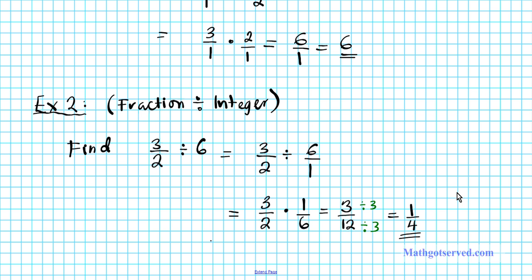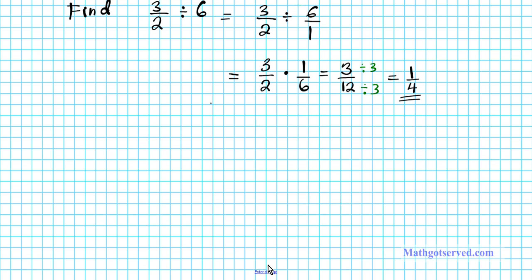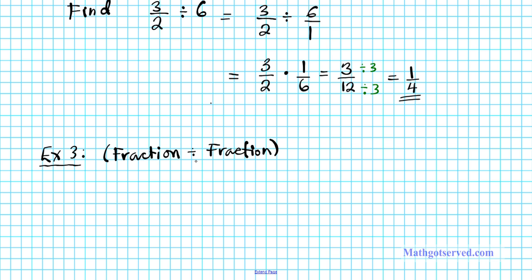Let's take a look at the next example. Example 3: we are going to divide a fraction by a fraction. Let's see how we can apply the drop change flip procedure in finding the result. We need to find the value of 6 over 5 divided by 2 over 15.